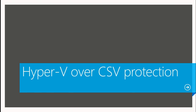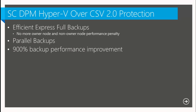Let's start with Hyper-V over CSV. CSV 2.0 was introduced in Windows Server 2012 in Hyper-V, and DPM has started using CSV 2.0 to provide better functionality for protecting virtual machines running on CSV. You can now do efficient express full backups. Previously, backing up VMs on CSV had a big performance overhead because a consistency check ran with every backup, taking a lot of time. With CSV 2.0, that limitation is removed, giving close to 900% improvement in backup performance.